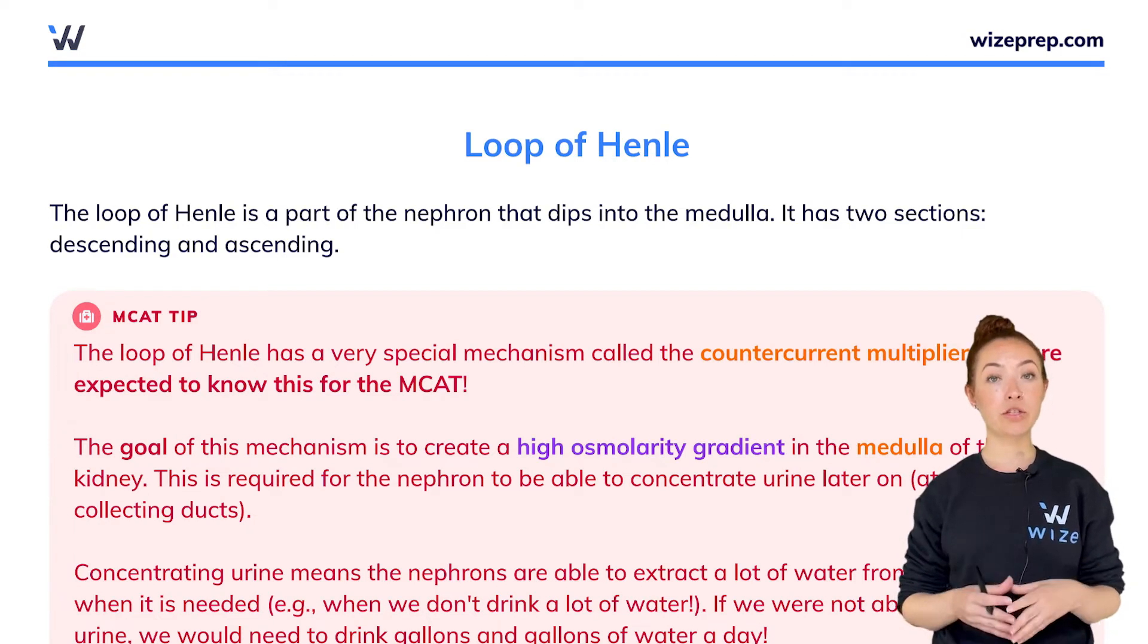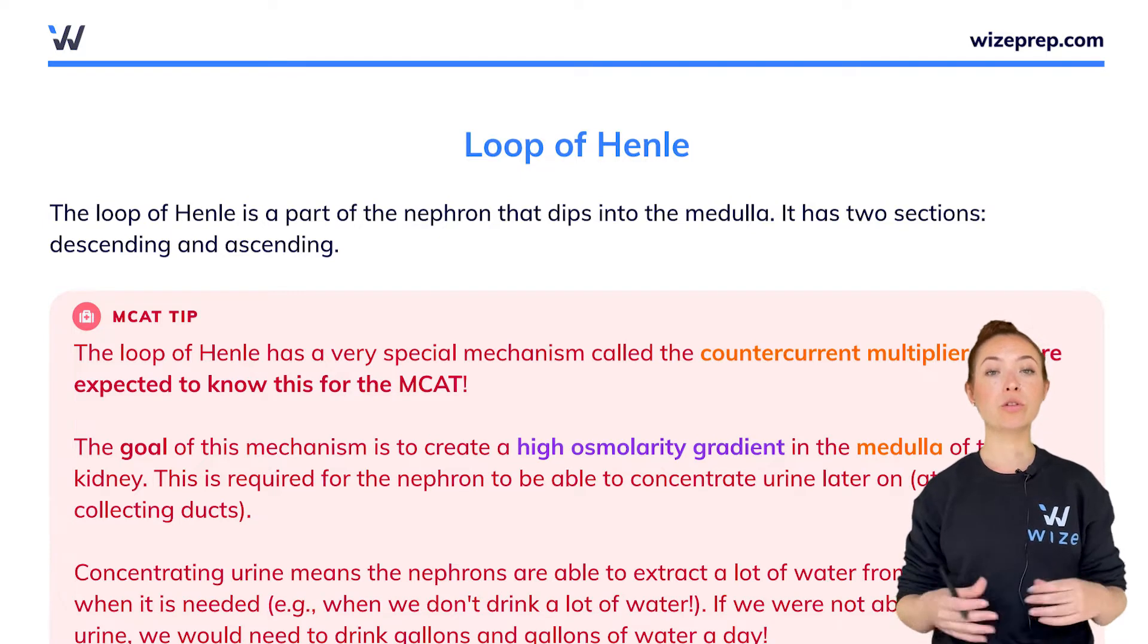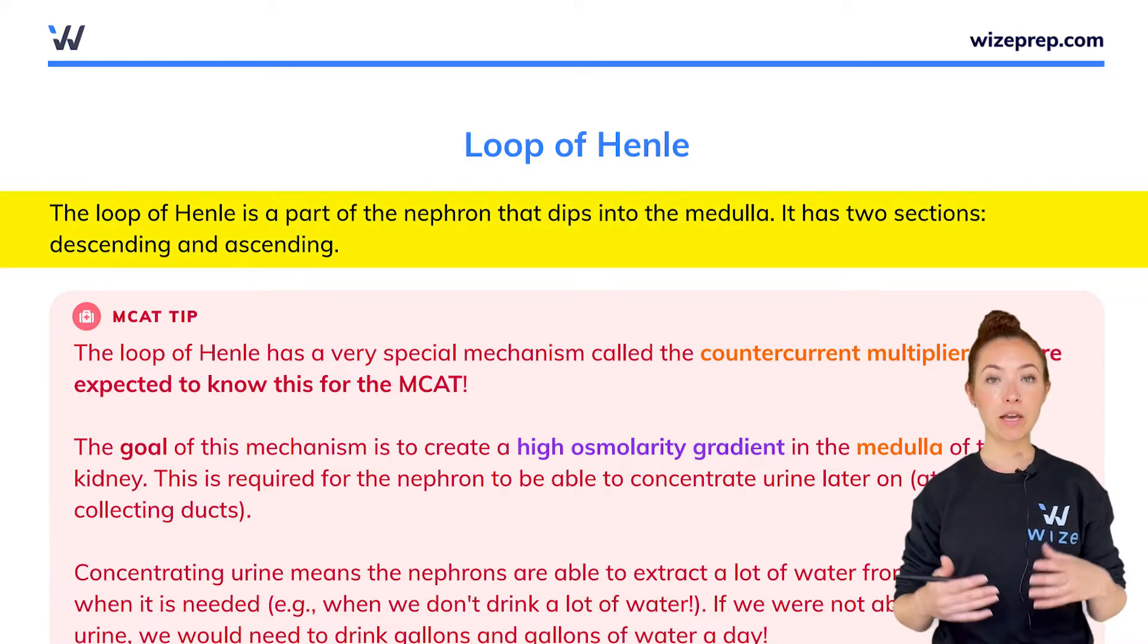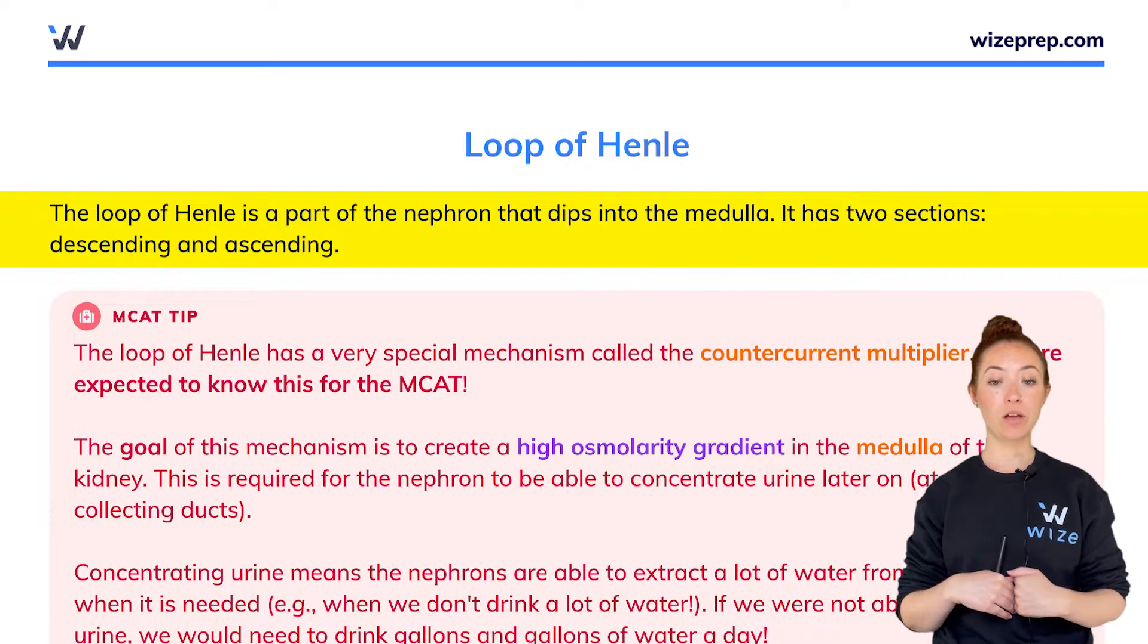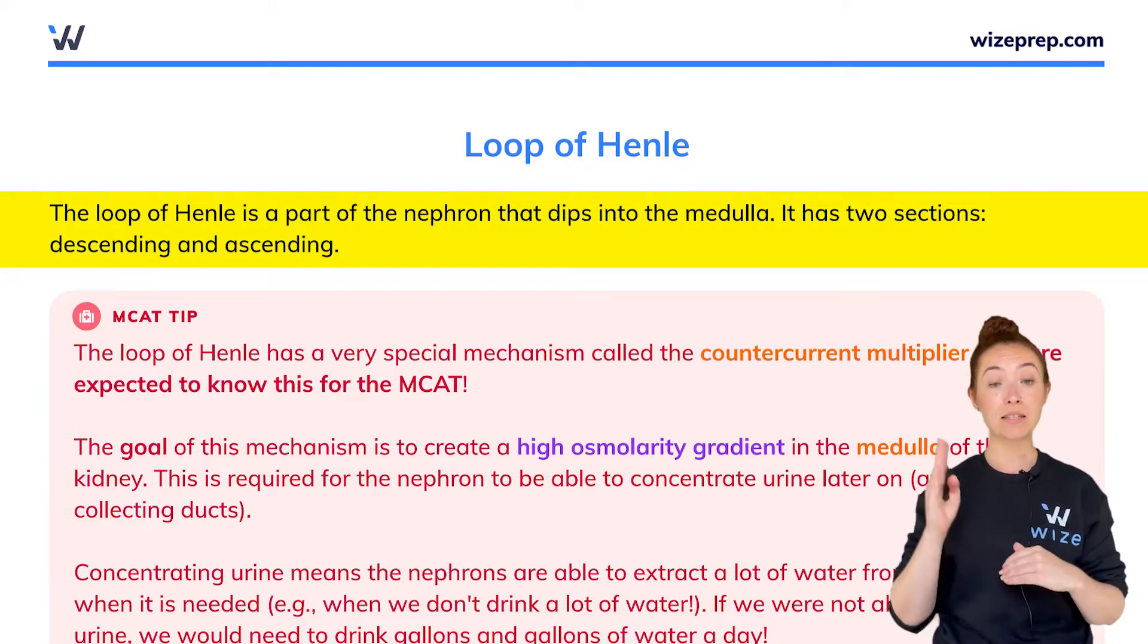Let's talk about the next section of the nephron that comes after the proximal convoluted tubule, which is called the loop of Henle. The loop of Henle is the part of the nephron that dips into the medulla and has two sections: a descending portion and an ascending portion.